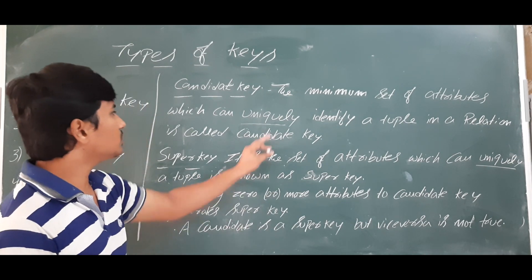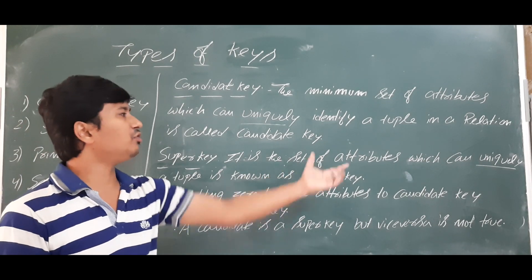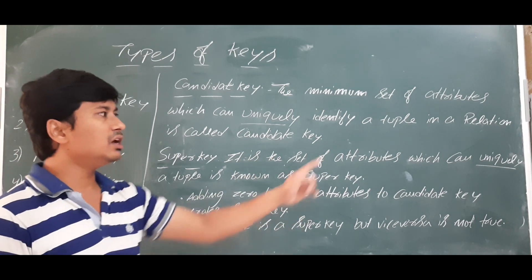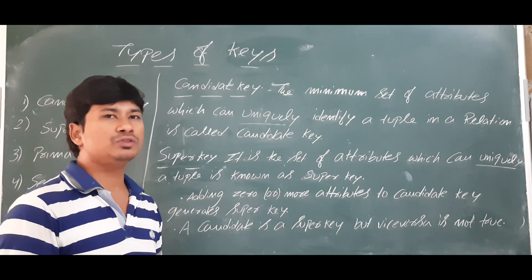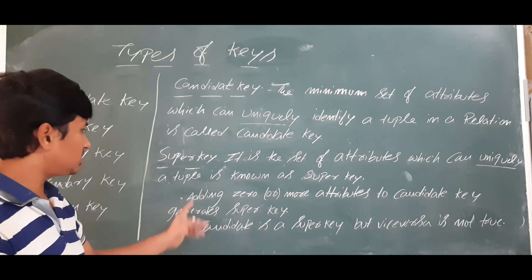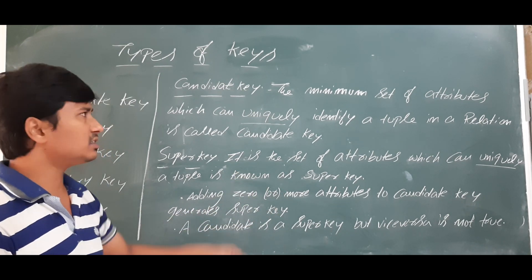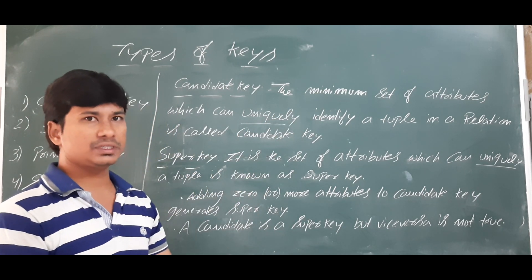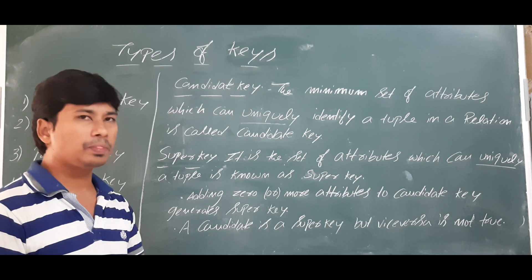Now let's talk about the super key. The super key is a set of attributes which can uniquely identify a tuple in a relation. Notice the difference: candidate key requires the minimum set of attributes, whereas super key is simply a set of attributes. Adding zero or more attributes to a candidate key generates a super key.